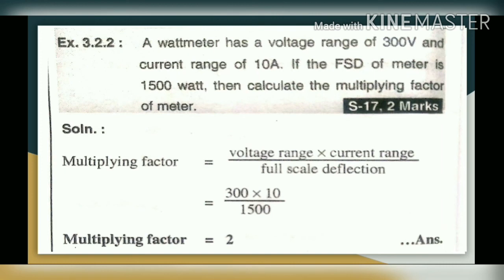Numerical 2: A wattmeter has a voltage range of 300 V and a current range of 10 A. If the full scale deflection (FSD) of the meter is 1500 W, calculate the multiplying factor. Multiplying factor = (Voltage range × Current range) / Full scale deflection = (300 × 10) / 1500 = 3000 / 1500 = 2. Answer: multiplying factor is 2.